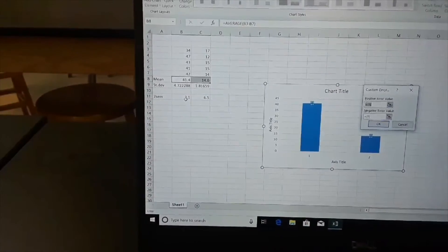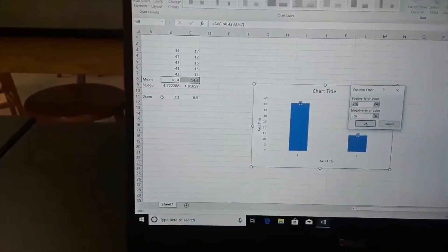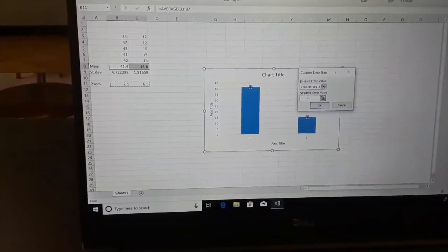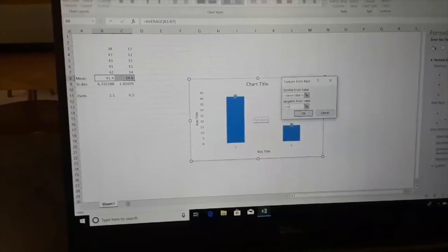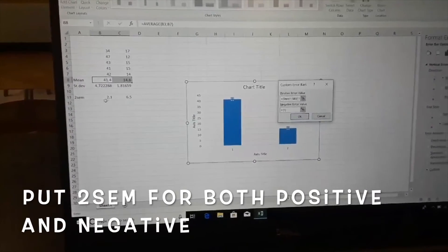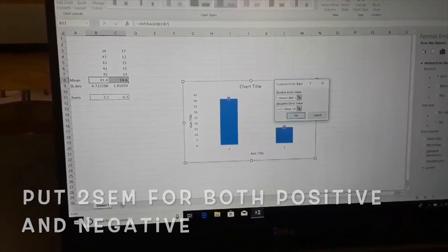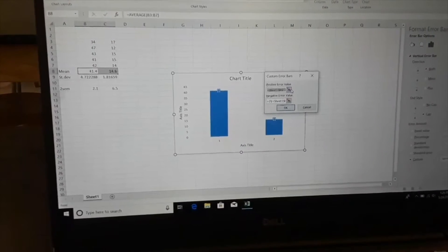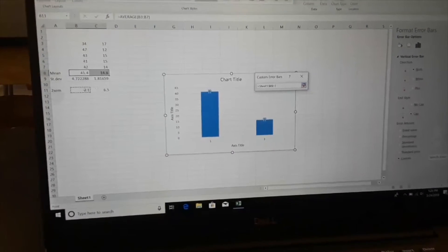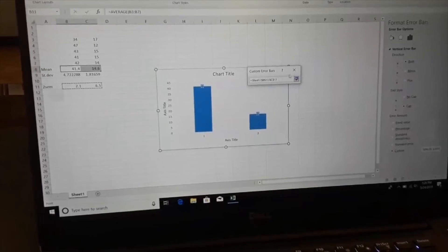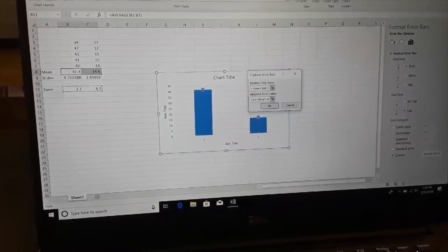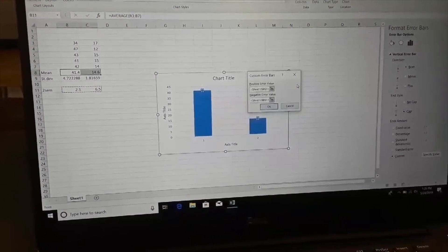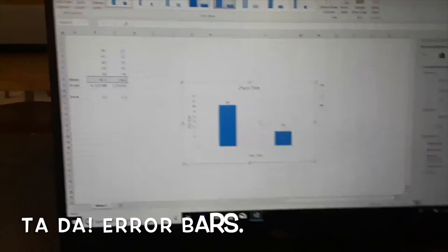So what you want to do is highlight this and go to this one. But you already highlighted for the positive one, so go to the negative one. Go to negative, highlight that one, click OK. If that doesn't work, do this: click that one, highlight it again, click that, click this again, click that, click that again, and you should have your standard error bars.